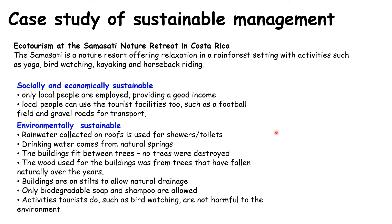In terms of environmental sustainability, the buildings have been designed to fit within the rainforest without damaging it. Rather than piping rainwater from miles away, rainwater is collected on the roofs for showers and toilets, and drinking water comes from local natural springs. The buildings fit between the trees — no trees were destroyed when the hotel was built. The wood used came from trees that had already fallen down naturally. The buildings are built on stilts to allow natural drainage, only biodegradable soap and shampoo are allowed, and all tourist activities such as bird watching are not harmful to the environment.